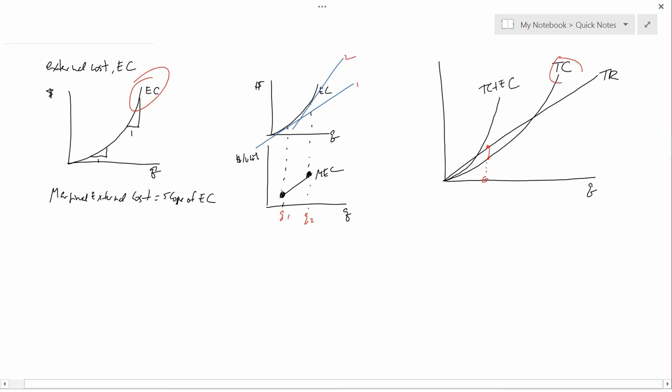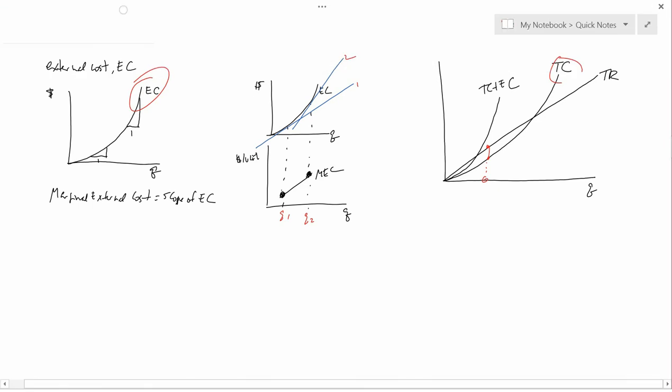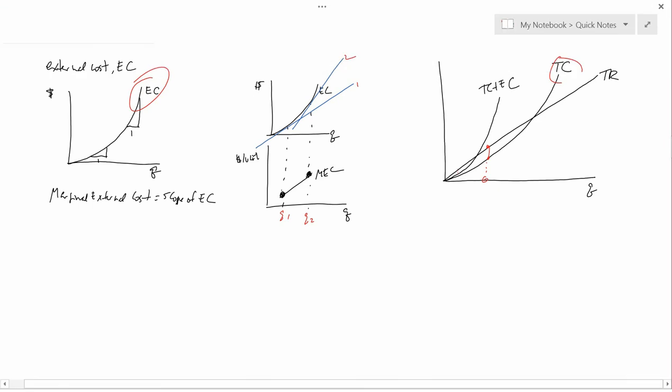Then, society is okay with maximizing profit given the curves that take external costs into account. So, what we're going to see in the next video is that society is going to want the firm to go here, where the gap between total revenue and TC plus EC is the smallest.